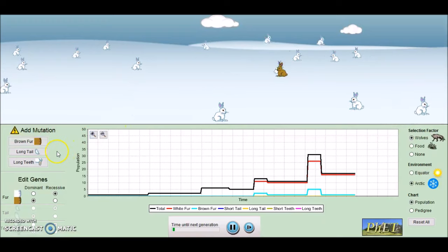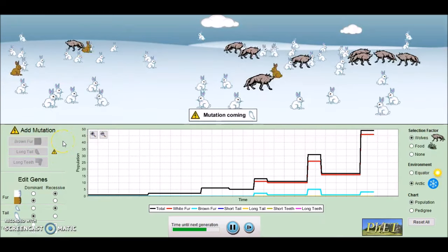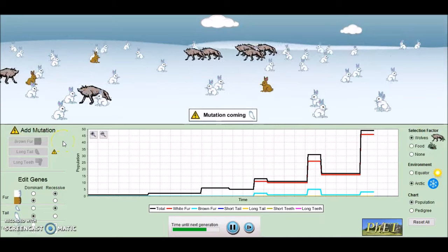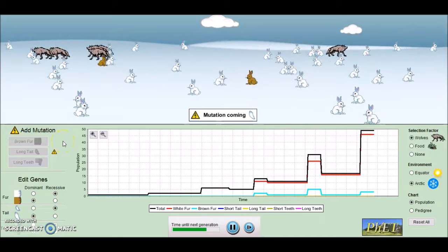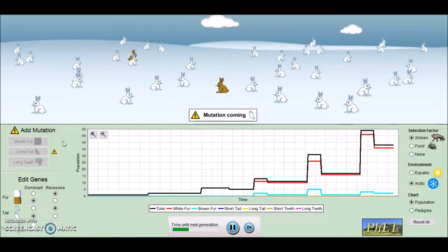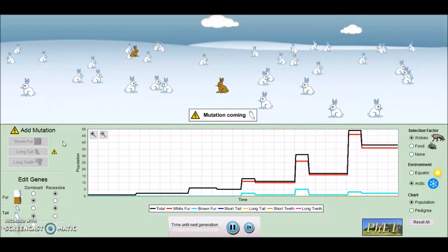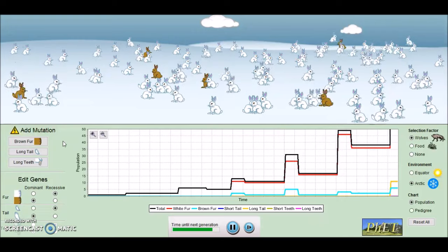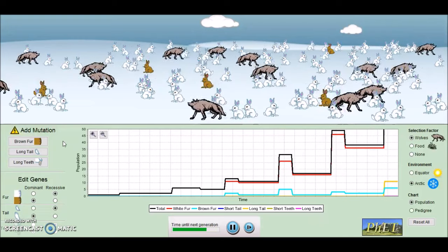Now, there's another mutation that I can add in here, the mutation for having a long tail. Now, this long tail is going to keep the bunnies nice and warm. So the bunnies that are going to be best served in this are going to be the bunnies with the white fur, but the bunnies with the long tail.